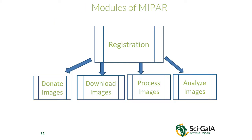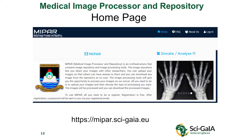The modules of MIPA — there are five of them. Starting with registration: you can donate images, download them, download images donated by others, process images, or analyze them. For registration you need a federated identity. Once you have the federated identity, you can use MIPA and other associated tools.